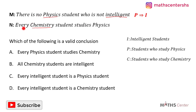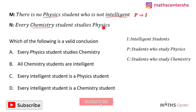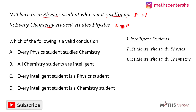The second statement is: every chemistry student studies physics. Using C to represent chemistry students and P to represent physics students — every chemistry student studies physics — so if someone belongs to C, it implies the person belongs to P. So C implies P. Based on these two statements we have established that P implies I and C implies P.